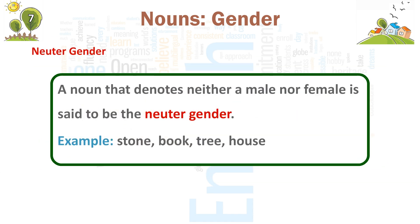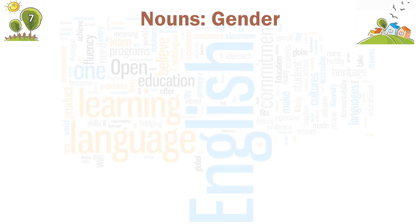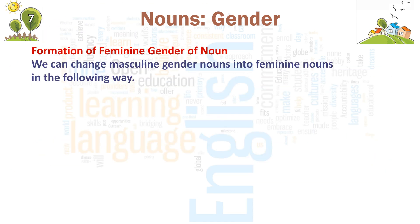Neuter gender. A noun that denotes neither a male nor a female is said to be of the neuter gender. Examples: stone, book, tree, house.